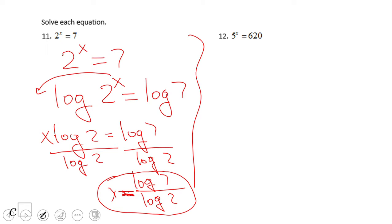Now if you really need a numerical solution or an approximation, you have to grab a calculator. You're going to say log of 7 divided by log of 2, and we end up with an approximation of 2.8, which makes sense. 2 to the power of 3 is 8, so it should be something less than 3.